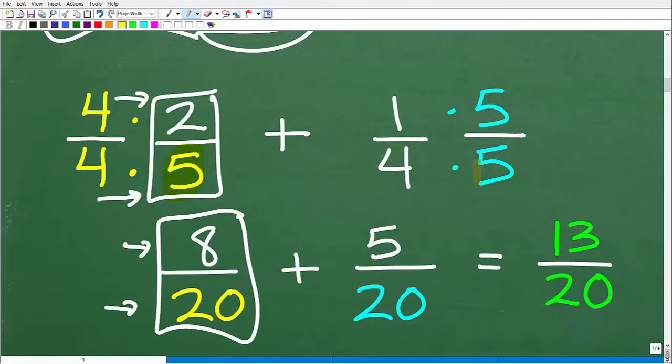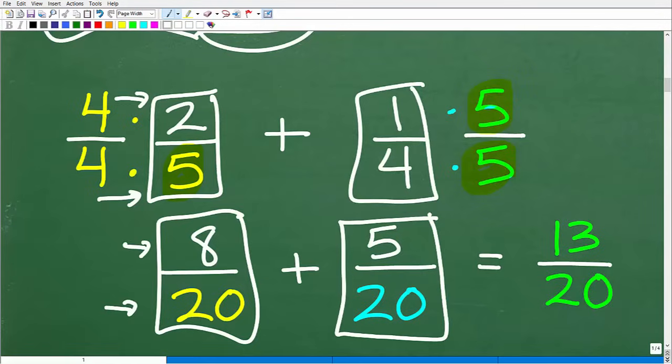We've got 1/4. How do I turn this four into a 20? Well, just multiply by five, but I got to multiply the numerator by five. So four times five is 20 and one times five, of course is five. So we rewrite or change the fraction 1/4 to an equivalent fraction 5 over 20.